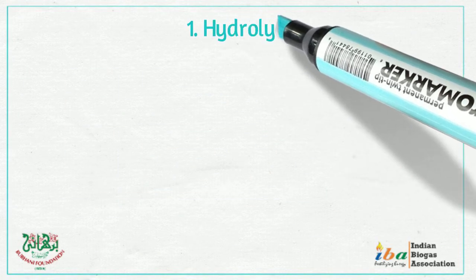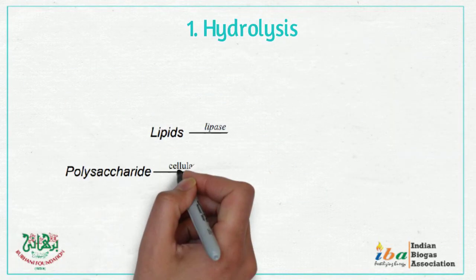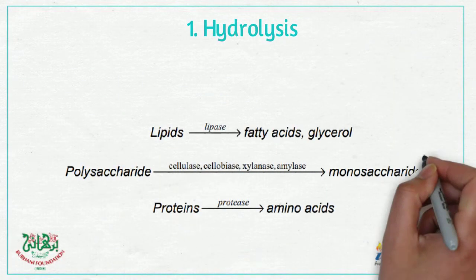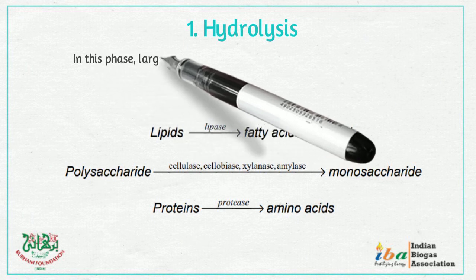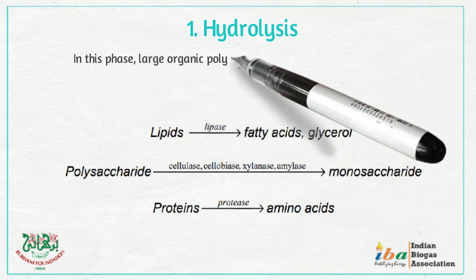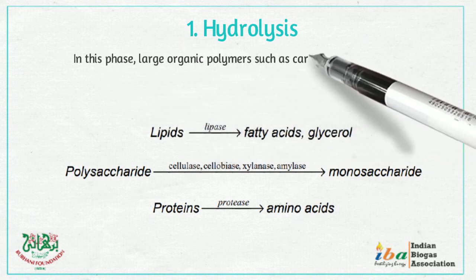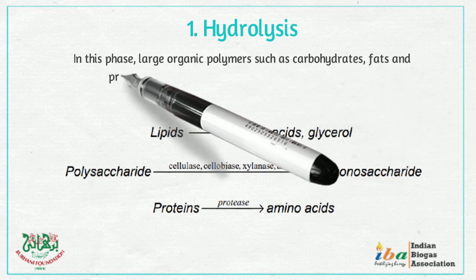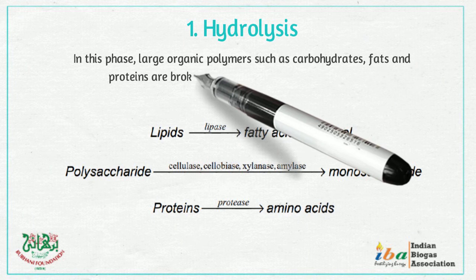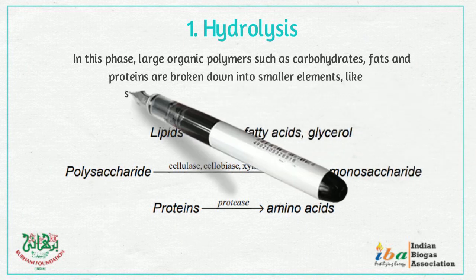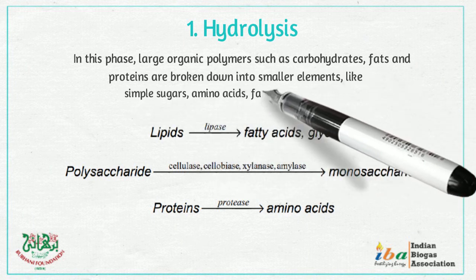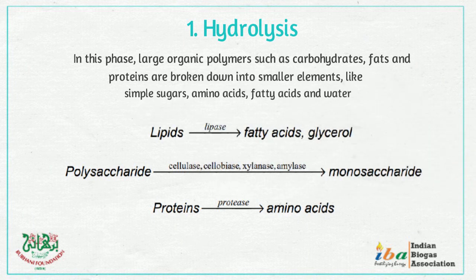1. Hydrolysis. In this phase, large organic polymers such as carbohydrates, fats and proteins are broken down into smaller elements, like simple sugars, amino acids, fatty acids and water.